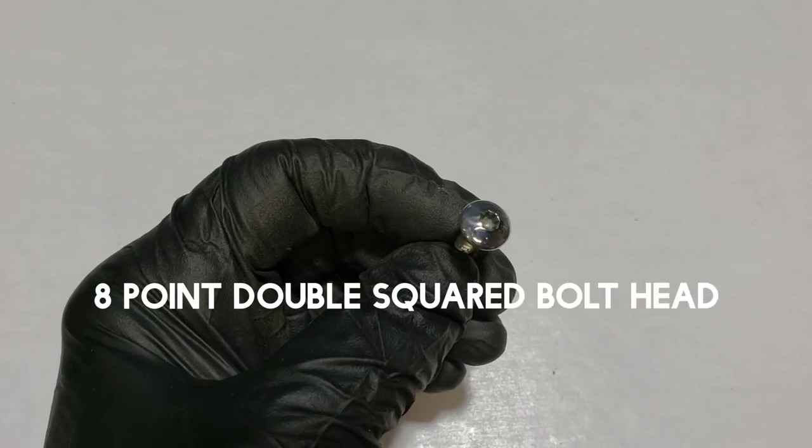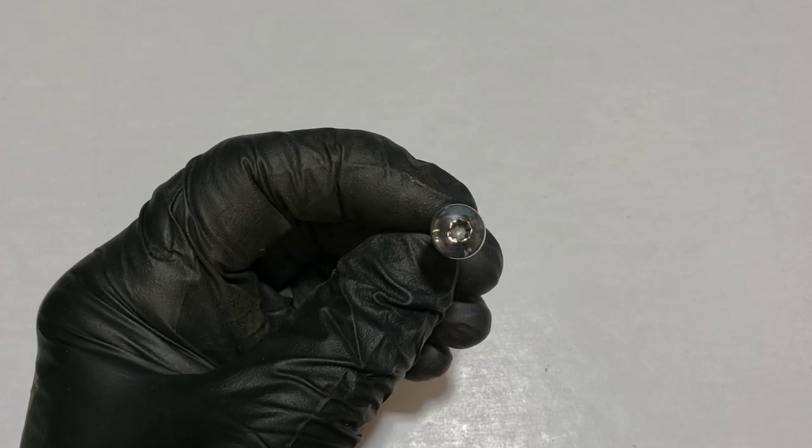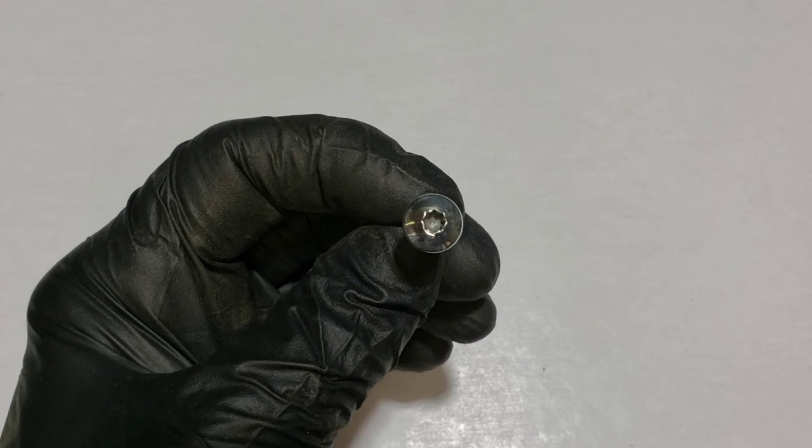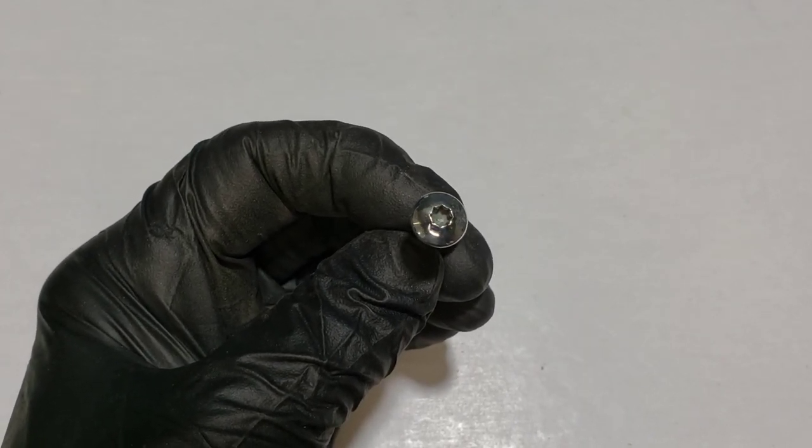We're dealing with these fasteners that you find on the outside of cargo trailers and RVs. They're not Torx. Torx are six point. These are eight. So they're called a double squared setup.